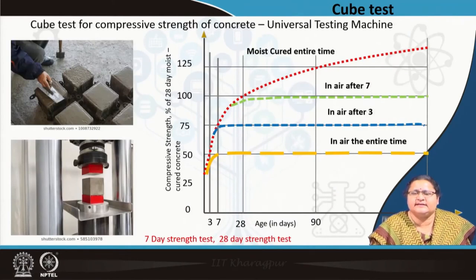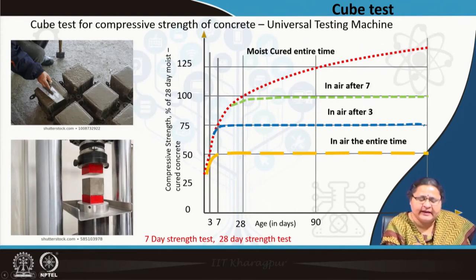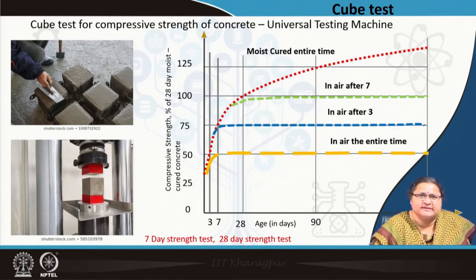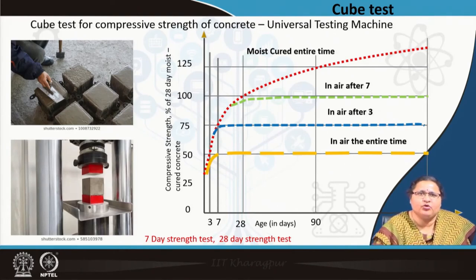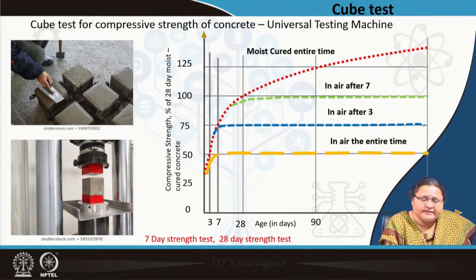Coming to the cube test — this is always done on site on the day of casting. Cubes are compacted using a tamping rod, and the samples are left with the same material being cast on that day. On the next day, you can demold them. The molds can be 3-inch, 4-inch, or 6-inch, and can also be cylindrical. At least 6 to 12 such cubes are taken.